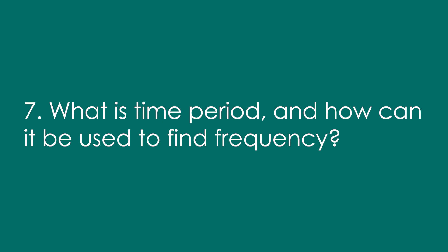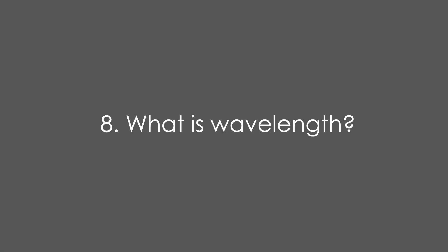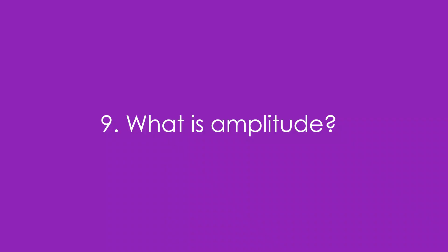7. What is time period and how can it be used to find frequency? It's the time it takes for one complete wave to pass a point. 8. What is wavelength? It's the length of one complete wave, which is the same as the distance between two adjacent peaks. Symbol is lambda and the unit is meters.